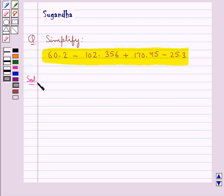We need to simplify 60.2 minus 102.356 plus 170.45 minus 25.3. First we shall convert the given decimals into like decimals.